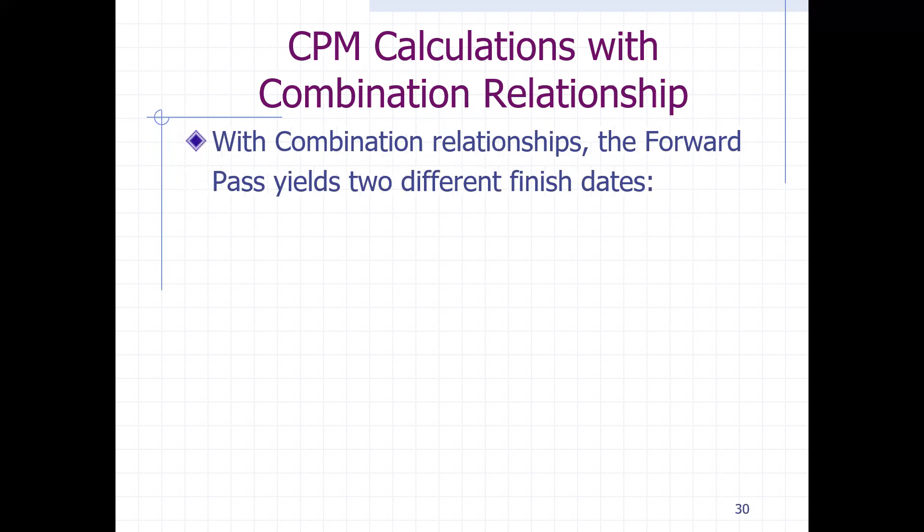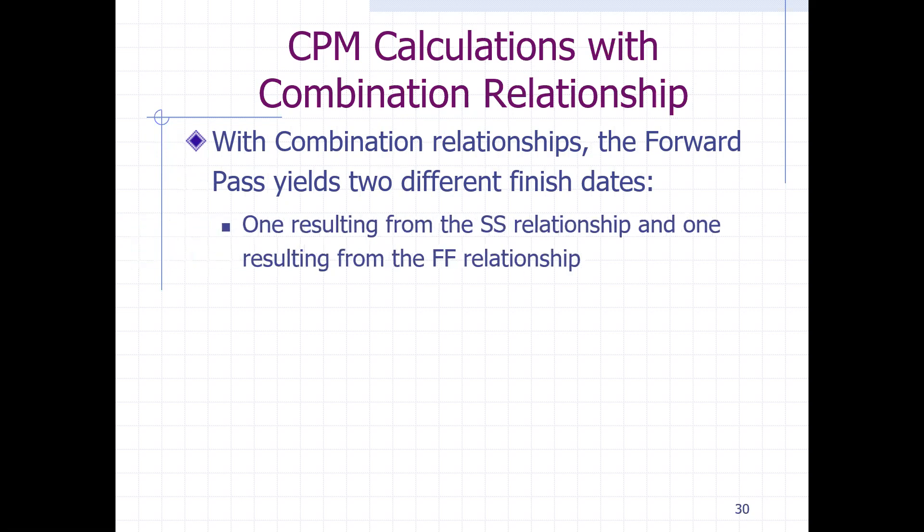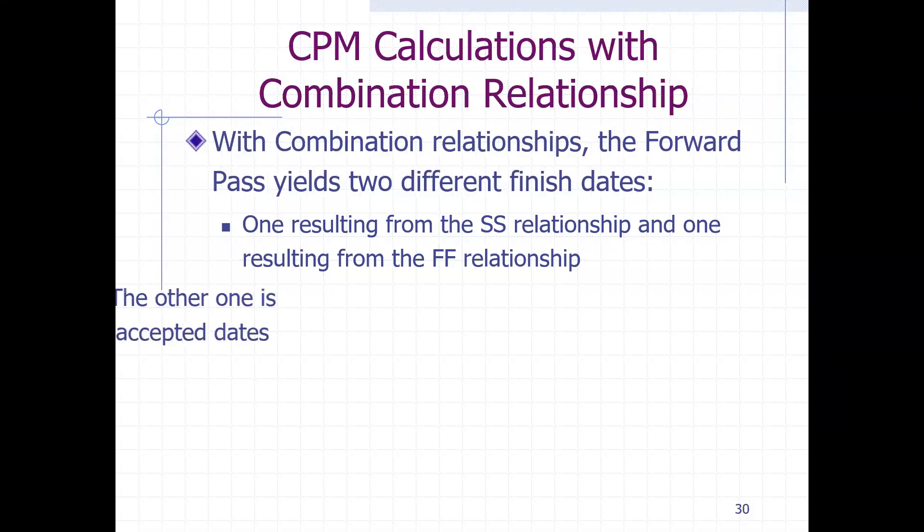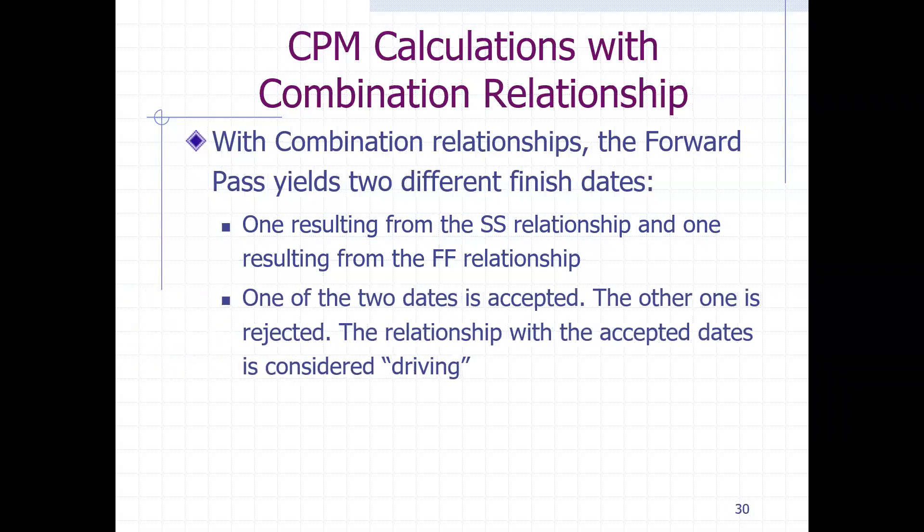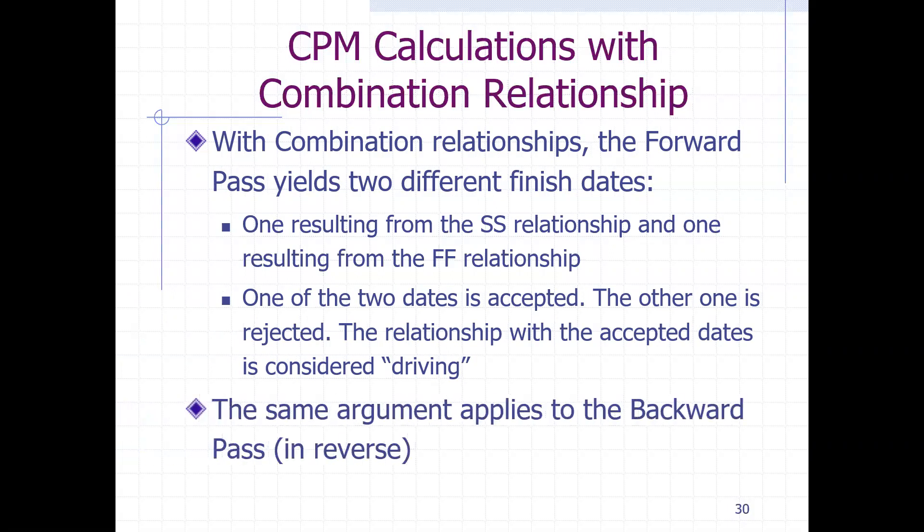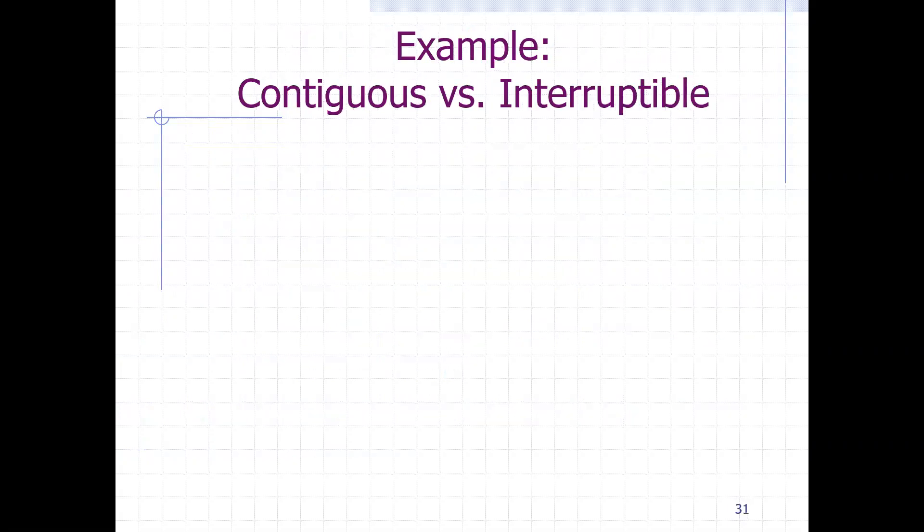So with the combination relationship, the forward pass, you have two different finishes, one resulting from the start-to-start relationship and one resulting from finish-to-finish relationship. So one date has to be accepted as the driving activity or driving type, and the second one is rejected due to unrealistic procedure. And the same goes for the backward as well.